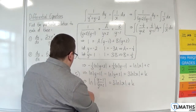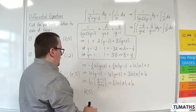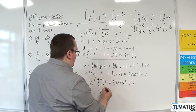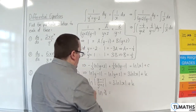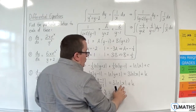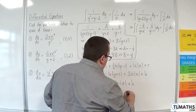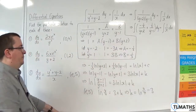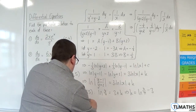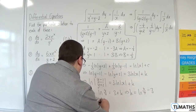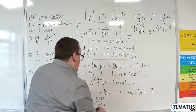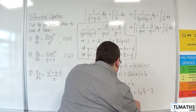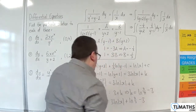Now I'm going to substitute in the point (e, 5). On the left-hand side, y = 5, so I get the natural log of 4 over 7. On the right-hand side, substituting in x = e, the natural log of e is 1, so I get 3 plus k. So k = natural log of 4 over 7, take away 3.